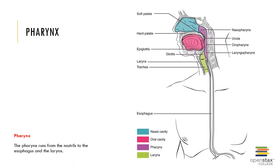The pharynx, more commonly called the throat, is divided into three regions. The nasopharynx is the superior portion located between the soft palate and the internal nares, lined with pseudostratified columnar epithelium, and houses the pharyngeal tonsils. The oropharynx extends between the soft palate and the level of the hyoid bone; at its boundary with the nasopharynx, the epithelium changes from pseudostratified columnar to stratified squamous to accommodate food movement and protect against abrasion. The laryngopharynx includes the portion between the hyoid bone and the entrance to the larynx and esophagus, and is also lined with stratified squamous epithelium.